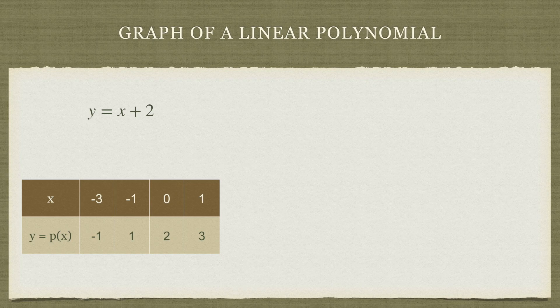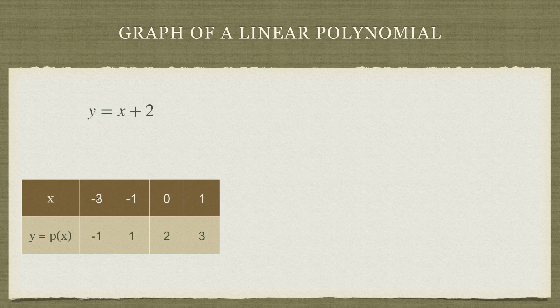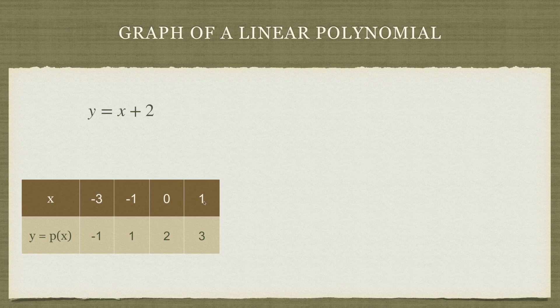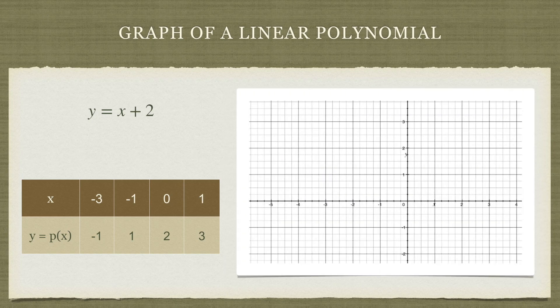Now we want to plot this on graph paper. Recognize here that x is -3, y is -1, so this is our first point. This pair (-3, -1) is the first point. The second point is (-1, 1), the third is (0, 2), and the last one is (1, 3).